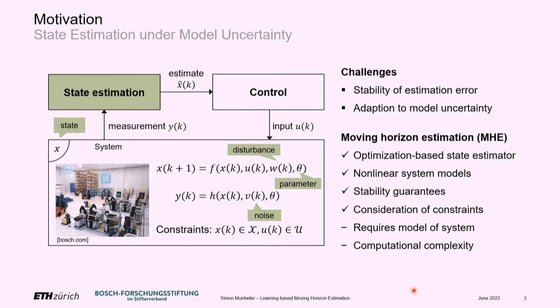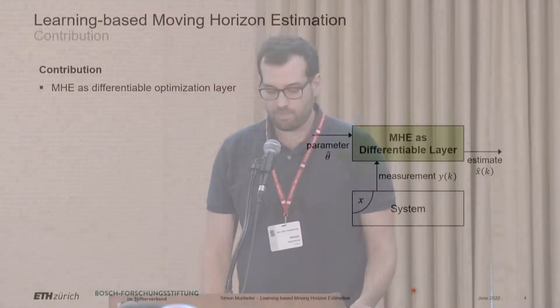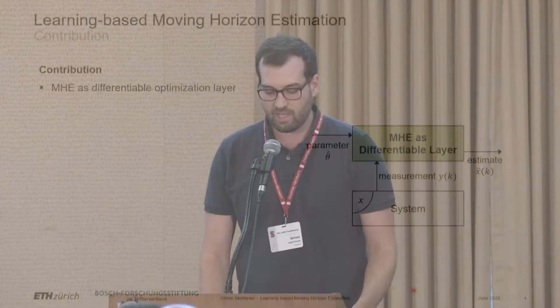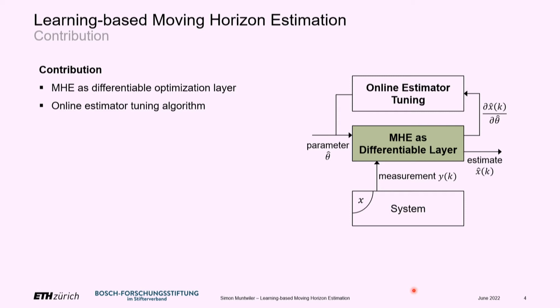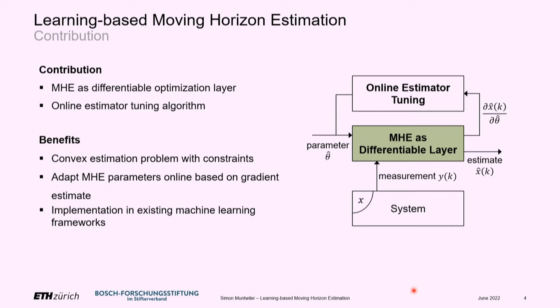We propose to formulate a moving horizon estimator as a differentiable optimization layer, which allows us to obtain the gradient of our state estimate with respect to the parameters in the estimator, and use that to online-tune the estimator performance. The benefits are that the resulting online estimation problem remains convex and thus easy to solve, we can adapt the estimator online to unknown system parameters, and the implementation exists in efficient machine learning frameworks.